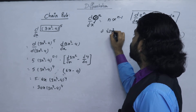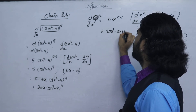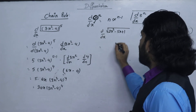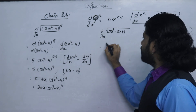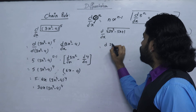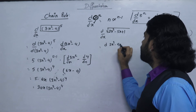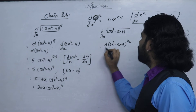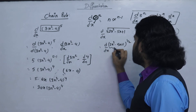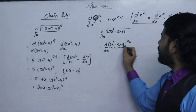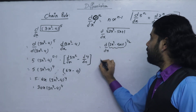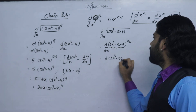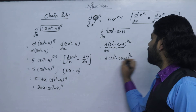Next example: 2x squared minus 5x plus 1 — find the derivative of 4x squared minus (2x squared minus 5x plus 1) with respect to dx. This is the derivative of 2x squared minus 5x plus 1, which can be written as (2x squared minus 5x plus 1) to the power 1 by 2.